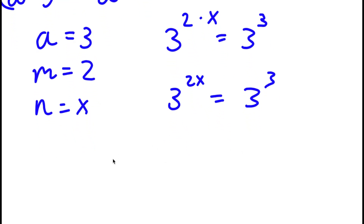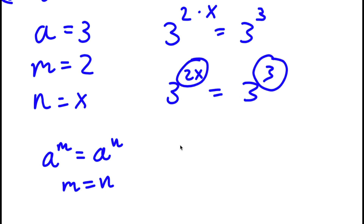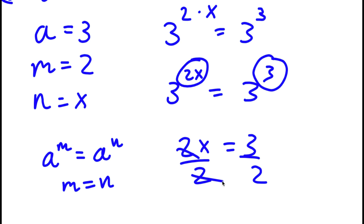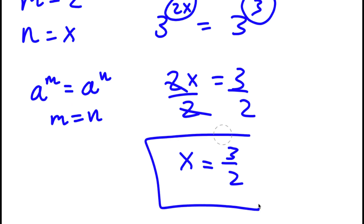When the bases are the same, the exponents must be equal. So 2x equals 3. Dividing both sides by 2, I get x equals 3 over 2. That's my answer.